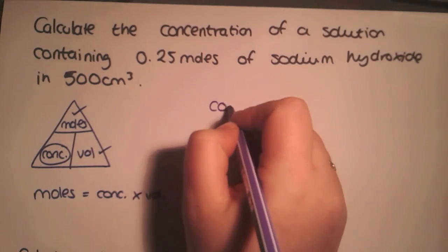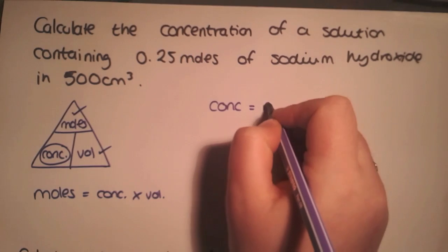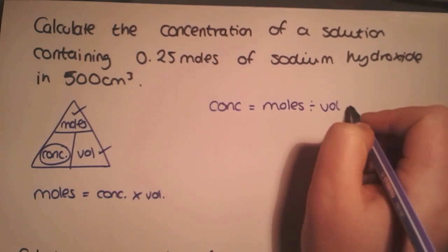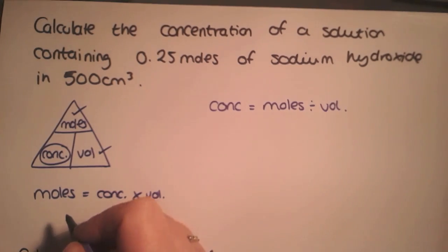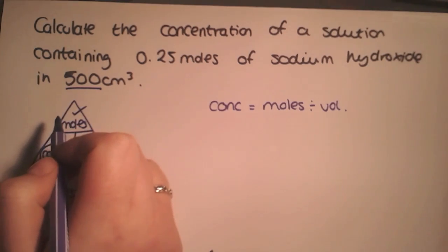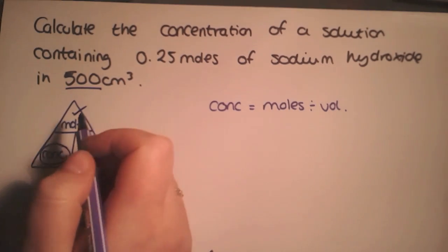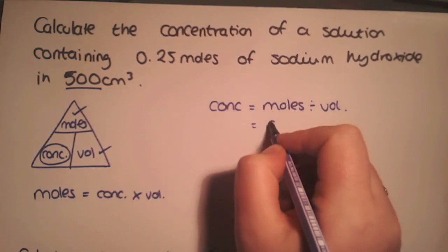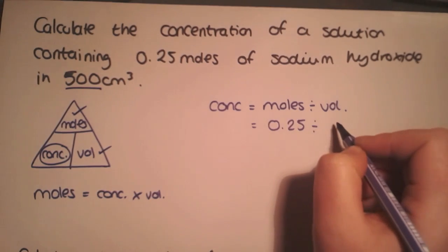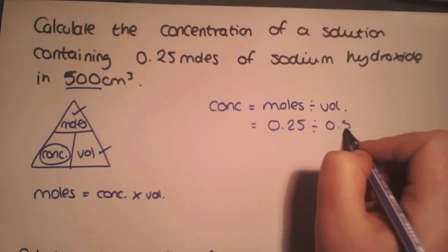So we need to rearrange our triangle to reach concentration equals moles divided by volume. Notice that the volume is in centimetres cubed, so we must divide by a thousand to have our volume in litres. So our moles is 0.25 divided by our volume, which is 0.5 litres.